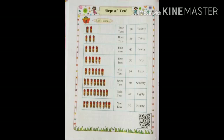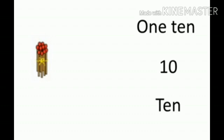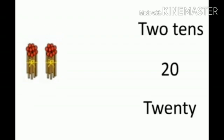Students, open page number 46. Steps of 10. Here, 1 bunch of math sticks is there. In that 1 bunch of math sticks, there are 10 math sticks — 1 bunch of math sticks means 1 ten. That is, 10, and the spelling of 10 is T-E-N. Here, 2 bunches of math sticks are there. In that 2 bunches, there are 20 math sticks — 2 bunches means 2 tens. That is, 20, and the spelling of 20 is T-W-E-N-T-Y.